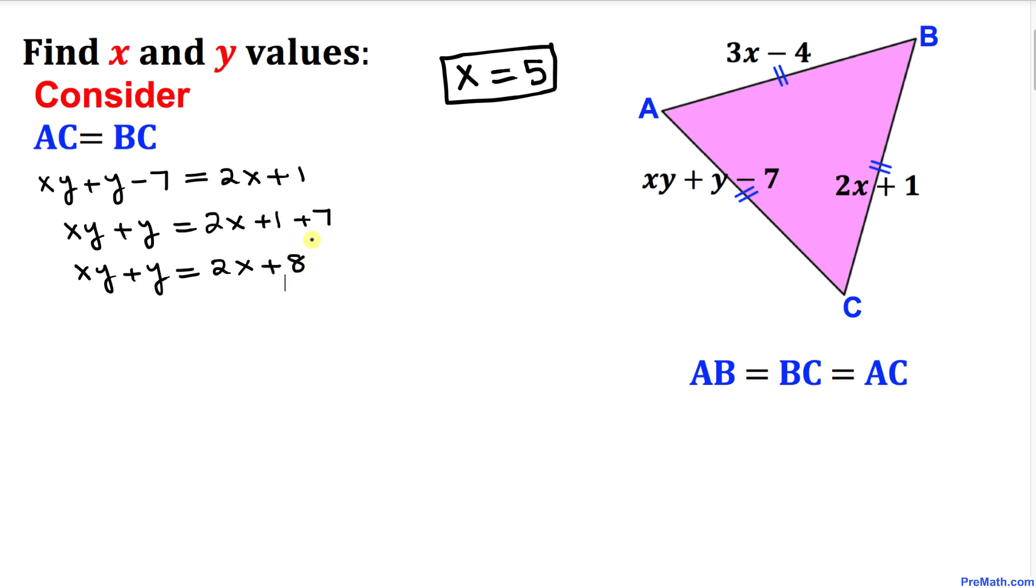Now we're going to substitute x equals 5 in this equation. So wherever we see x, I'm going to replace that value by 5, so we get 5y plus y equals 2 times 5 plus 8. Let's simplify: 5y plus y gives us 6y.